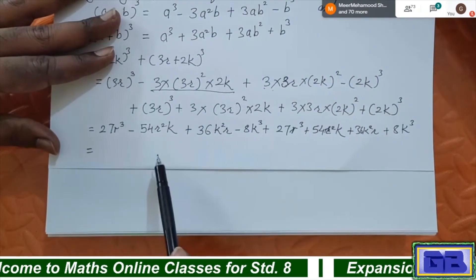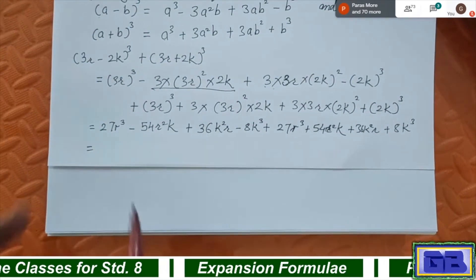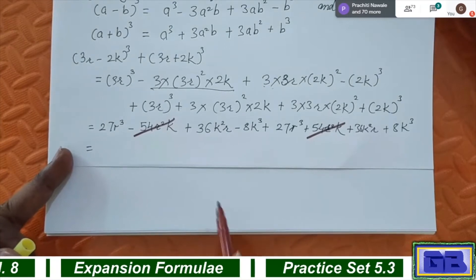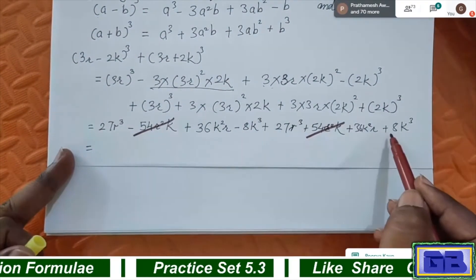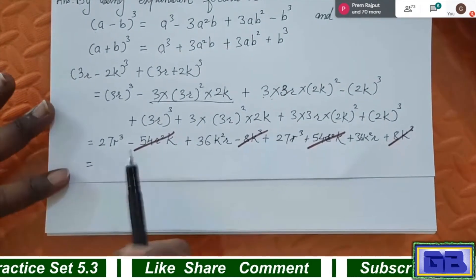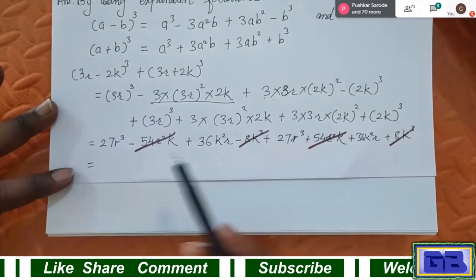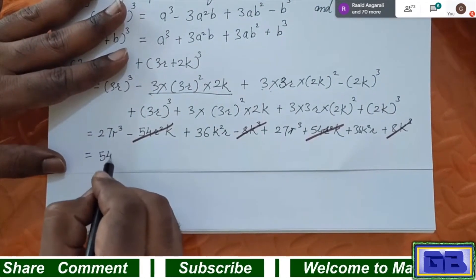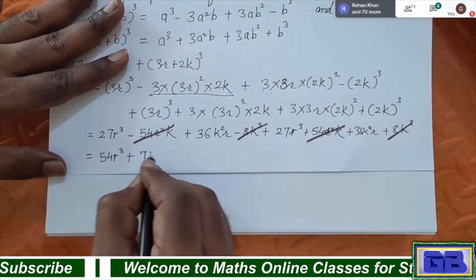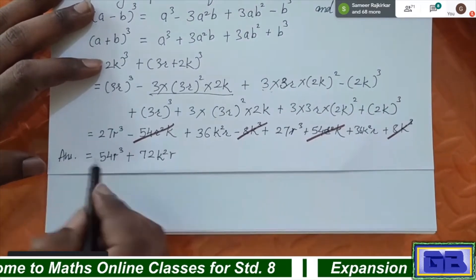After cancellation: 27r³ + 27r³ = 54r³. And 36k²r + 36k²r = 72k²r. Nothing else is left. So the final answer is 54r³ + 72k²r.